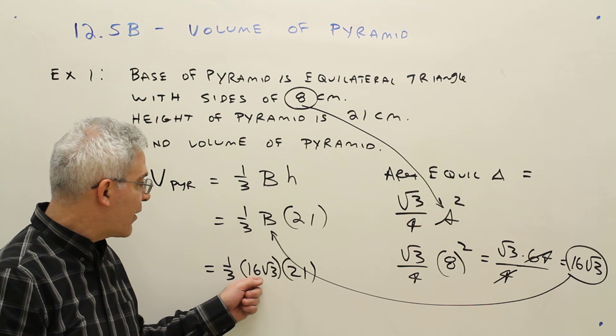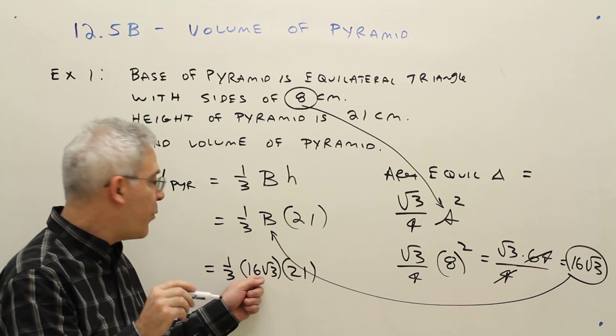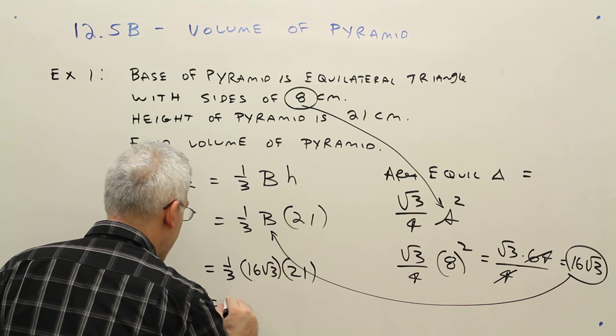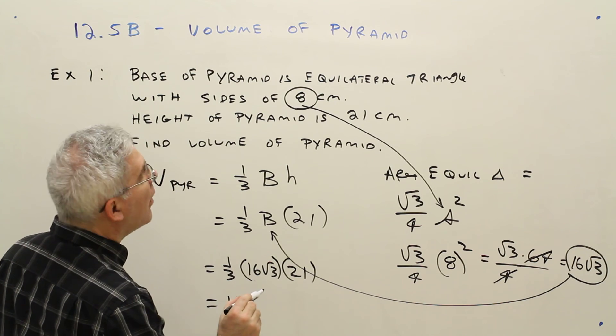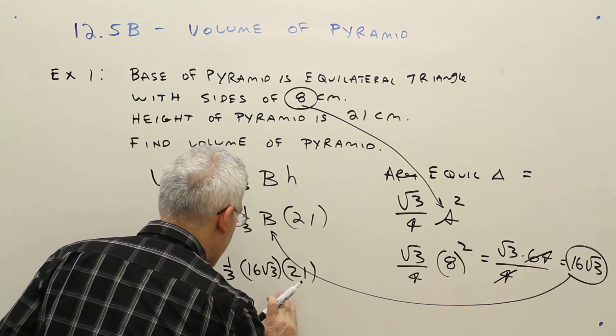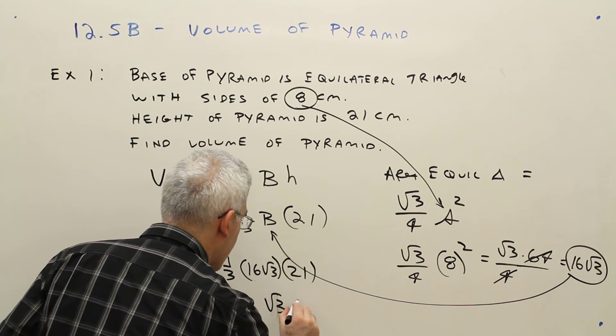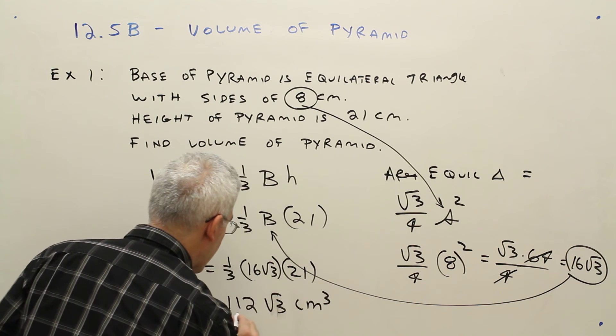70, 40, 112. So our answer will be 112 times the square root of 3 centimeters cubed.